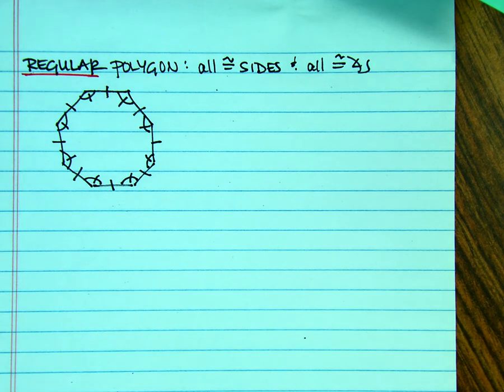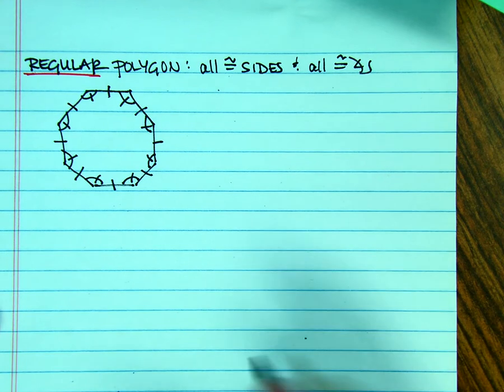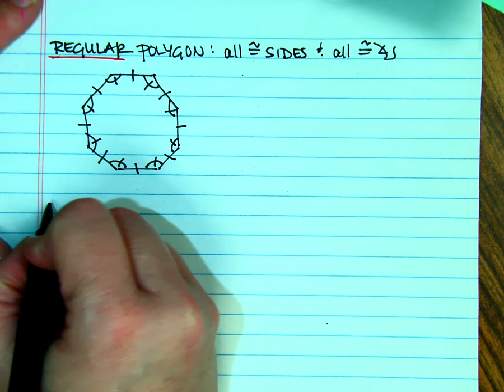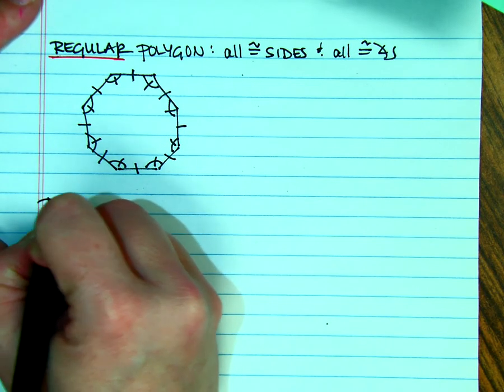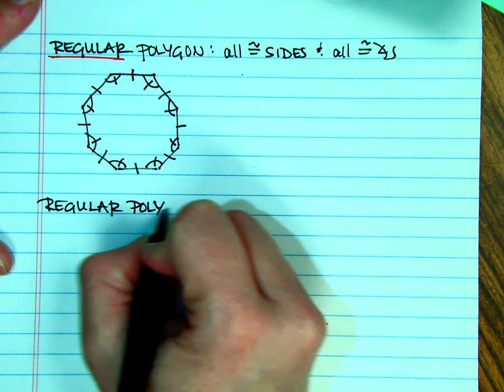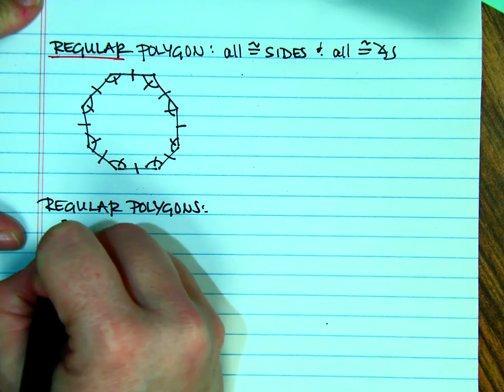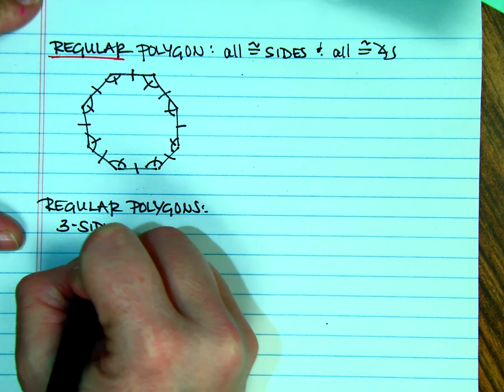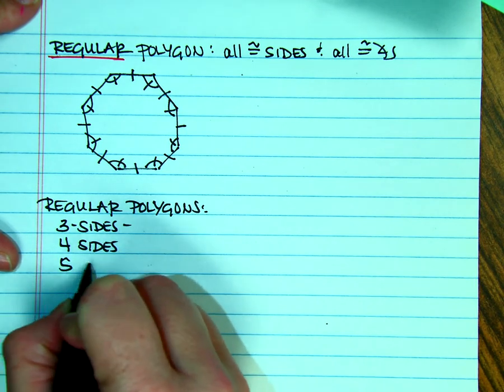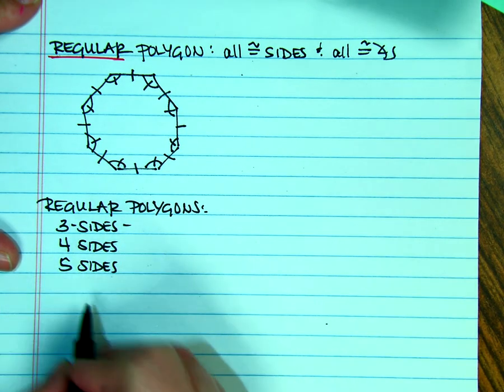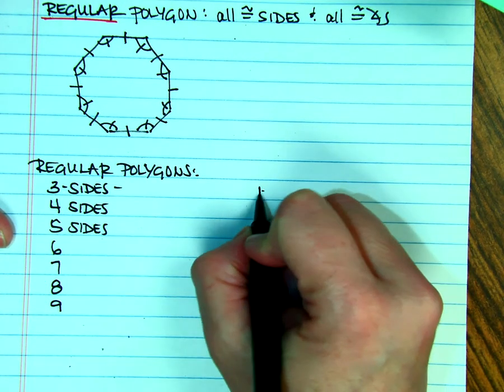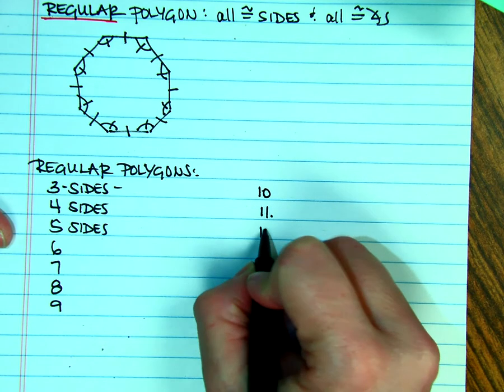You also need to know the different names of them. So very quickly, we're going to create a list of all the regular polygons. If we have three sides, four sides, five sides, six, seven, eight, nine, ten, eleven, and twelve sides.